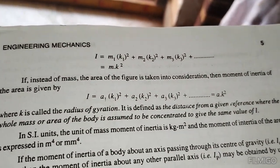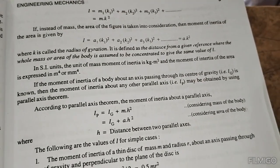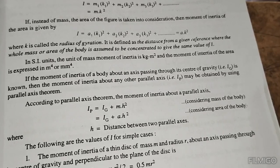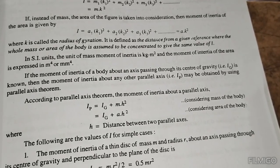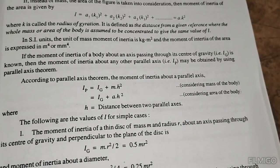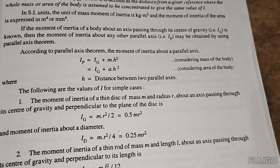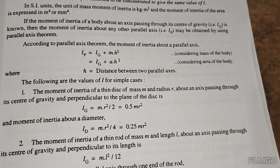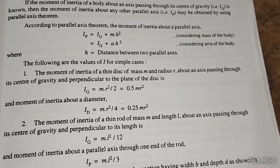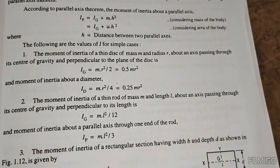The moment of inertia I equals m times k squared. Using the parallel axis theorem: I equals I_A plus m times k squared, or I_B equals I_G plus m times h squared. For a solid cylinder about its centroidal axis: I_G equals m r squared divided by 2, which equals 0.5 m r squared. About a diameter: I_G equals m r squared divided by 4.